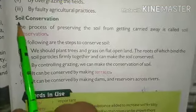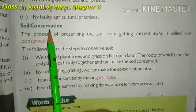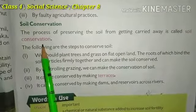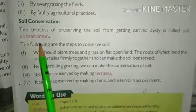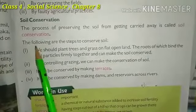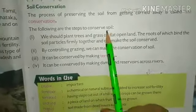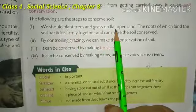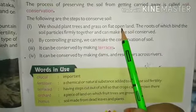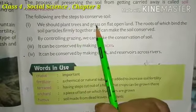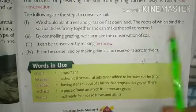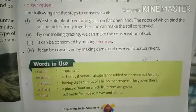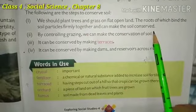Now students, a very important point - that is soil conservation. The following are the steps to conserve soil. Number one: we should plant trees and grass on flat, open land. The roots of trees and grass bind the soil particles firmly together, which helps conserve and save the soil.